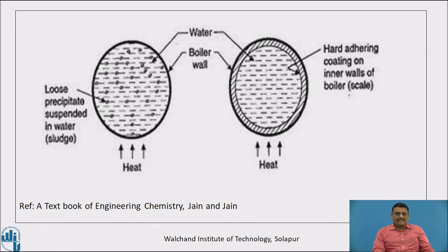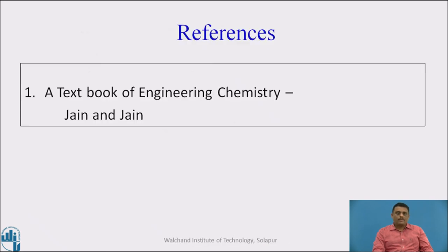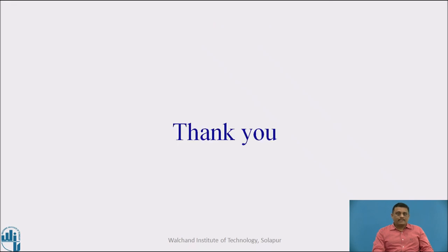This is the diagrammatic representation — the first is scale and the second is sludge, shown in a cross-sectional view of the water coil. All this content has been prepared by referring to the textbook of Engineering Chemistry written by Jain and Jain. Thank you.